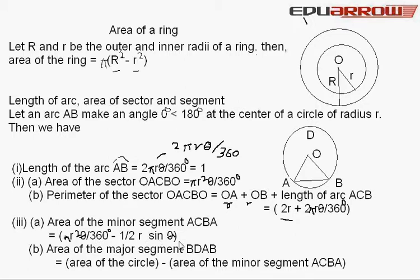Area of the major segment BDAB is equal to area of the circle minus area of the minor segment ACBA.